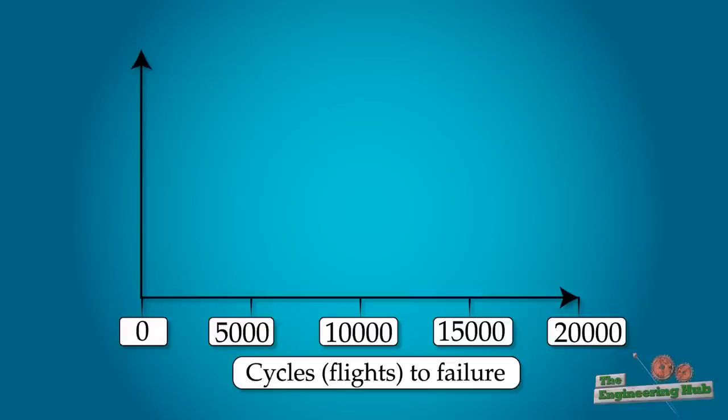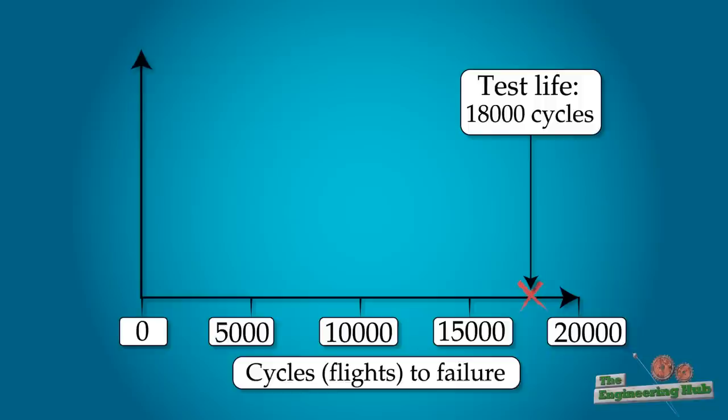The investigation also pointed out the statistical blunder that the de Havilland company made prior to the accidents. Even though their tests showed an estimated life of 18,000 flights, their random sample was not necessarily the weakest in the fleet, so it was wrong to assume that all planes would be able to achieve that fatigue life. The accidents happened within the first 4,000 cycles. These were the weakest samples in the fleet and failed first.